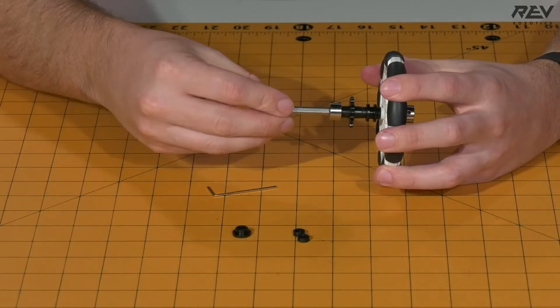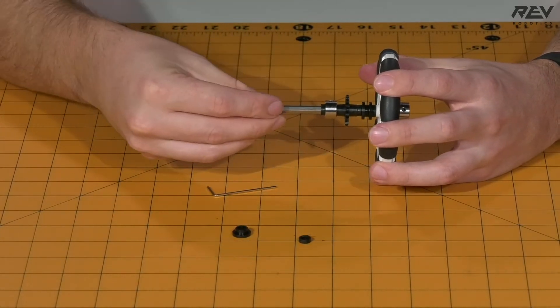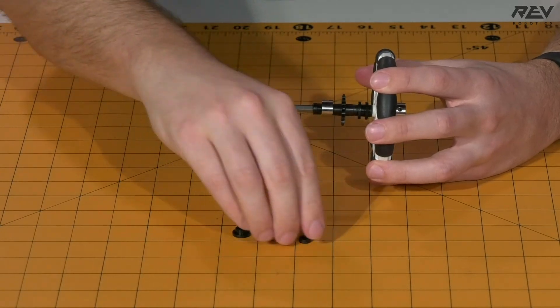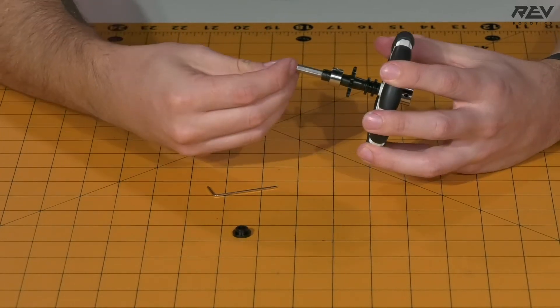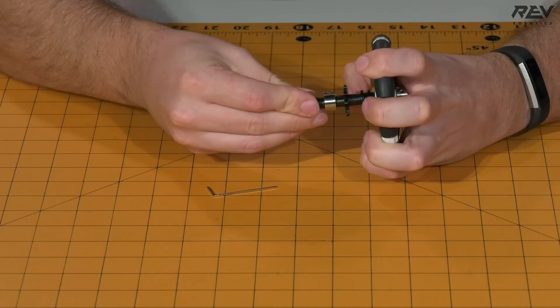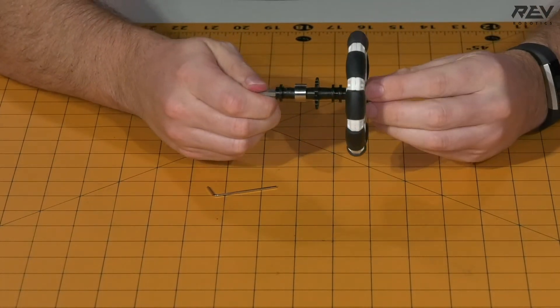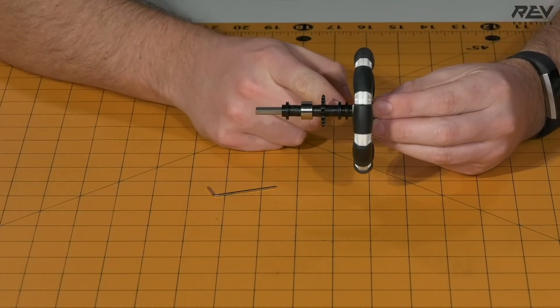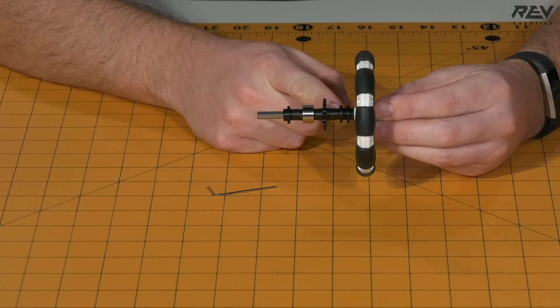Once complete, add the remaining three millimeter spacers into a spacer stack, followed by your last remaining through-bore bearing. Make sure to note the location of the flange on this bearing is the opposite of the two bearings you put on previously.